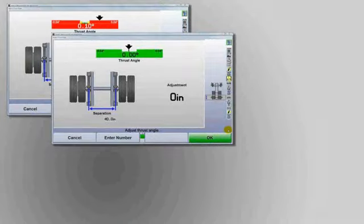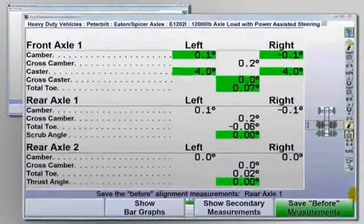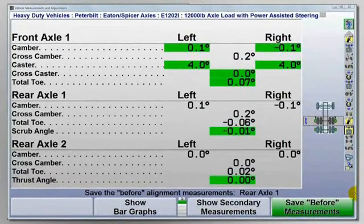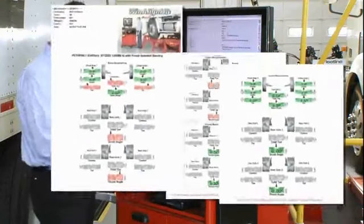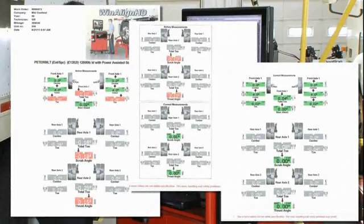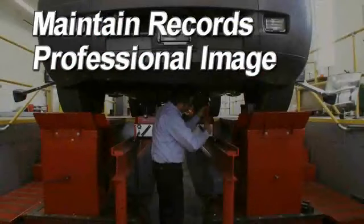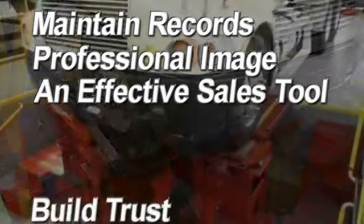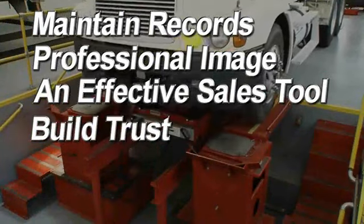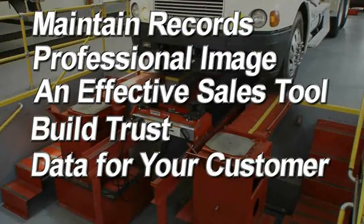WinAlign HD captures before and after readings for all measurements on every axle, so at the close of the alignment you can print a copy of the work performed. A printed record of every job helps you sustain quality assurance in the alignment bay, maintain records for repeat customers, bolster your professional image, and helps you better sell your alignment service. It also helps instill trust and provides your customer accurate and more complete data for their maintenance records.